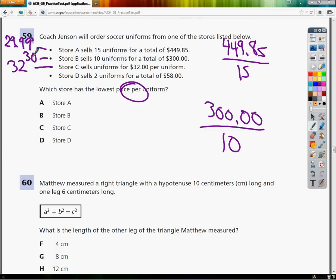And for the last one, I do $58 divided by two uniforms. And you come out with $29 even.